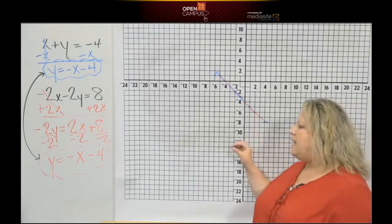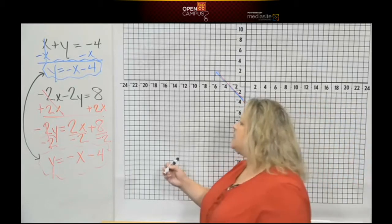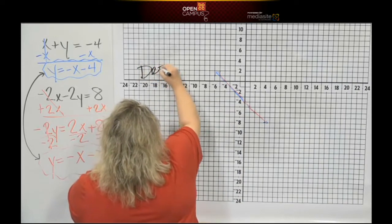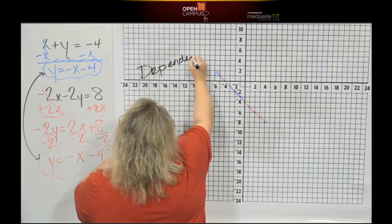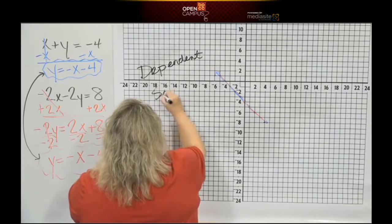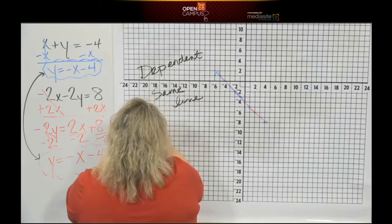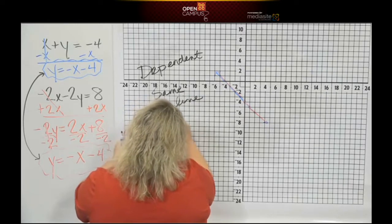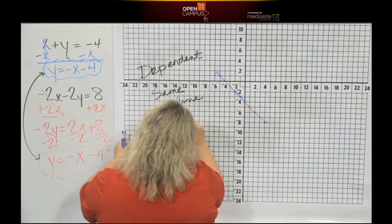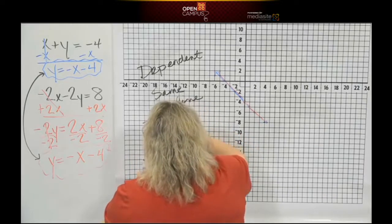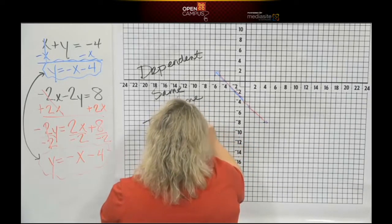That's why I say that if they are the same exact line, they are dependent. And if they are dependent, they are the same line, which means they have infinite solutions. I cannot spell. Infinite solutions.